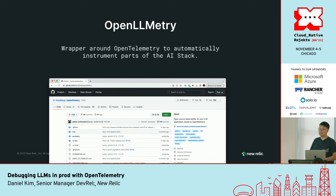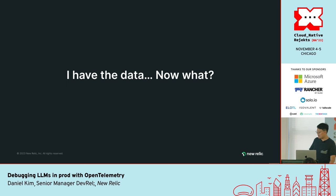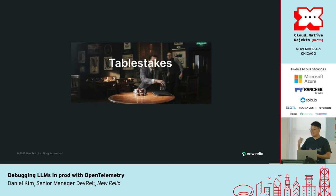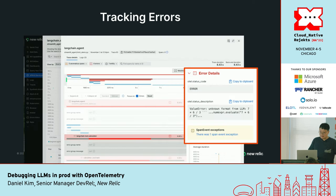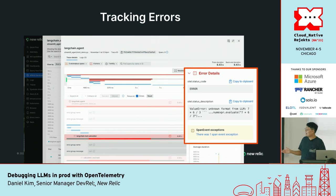Now that we've gone through building the app, instrumenting the app — we have the data. What do we do with all of this data in your observability provider? Let's first talk about table stakes — things you can do five minutes after you start getting data out of your system. You can start tracking things like duration, so how long each request took. You can also start tracking errors, and these errors are very interesting in the case of LLMs because they're easily fixable. This is a particular error I got while building my Ice Spice app. I ran the same query through the app 20 times and this was the only time that it showed this error — unknown format from LLM.